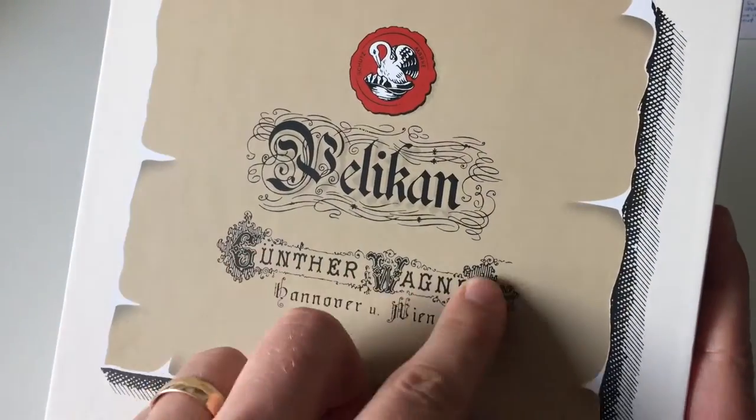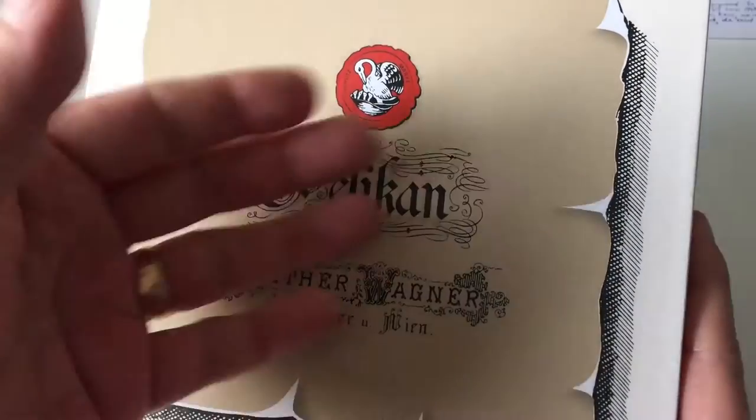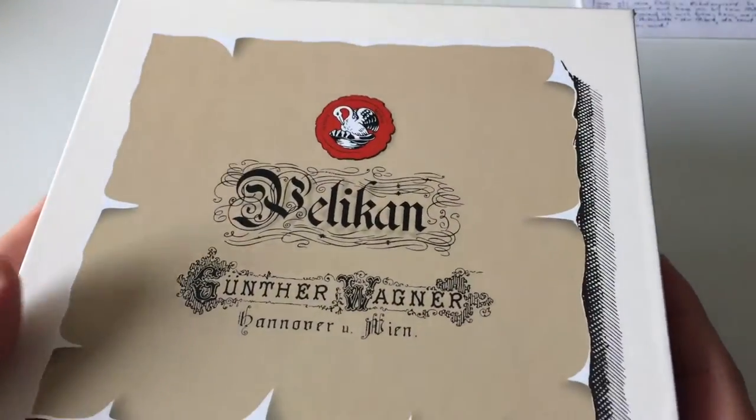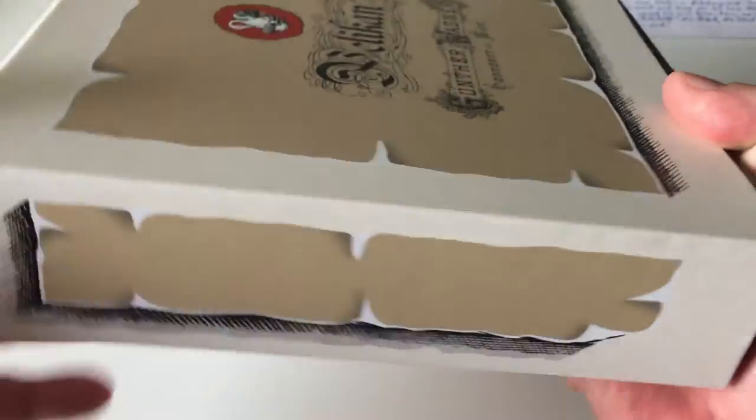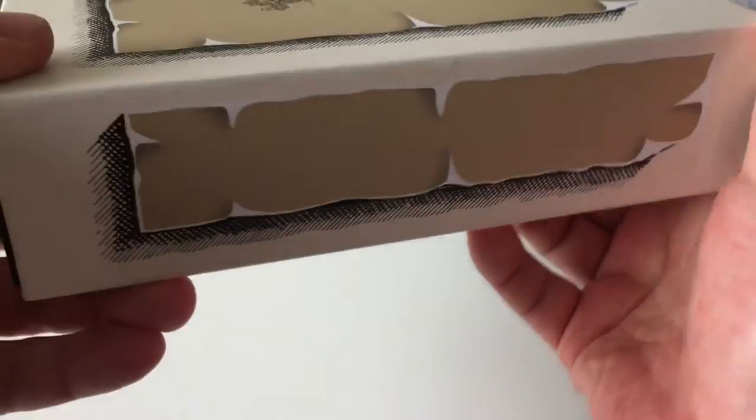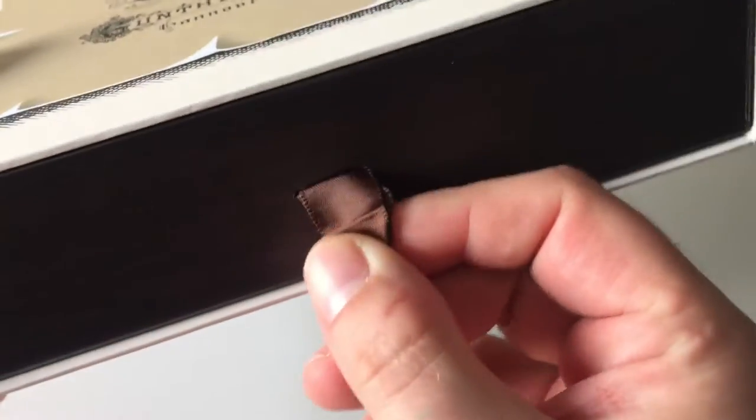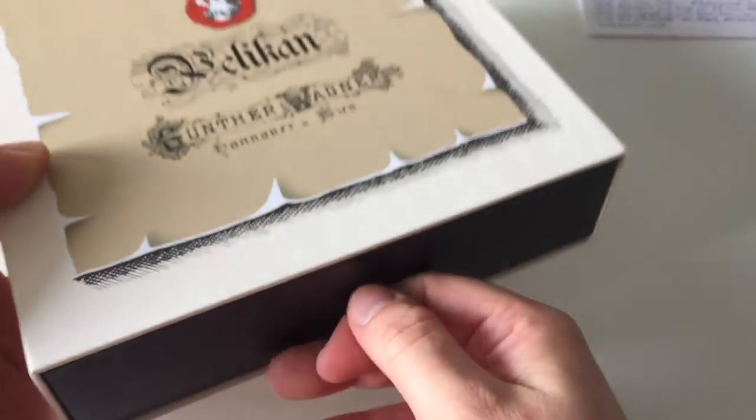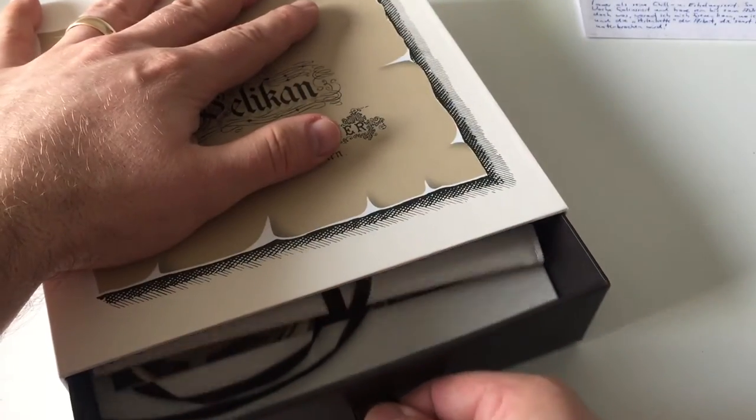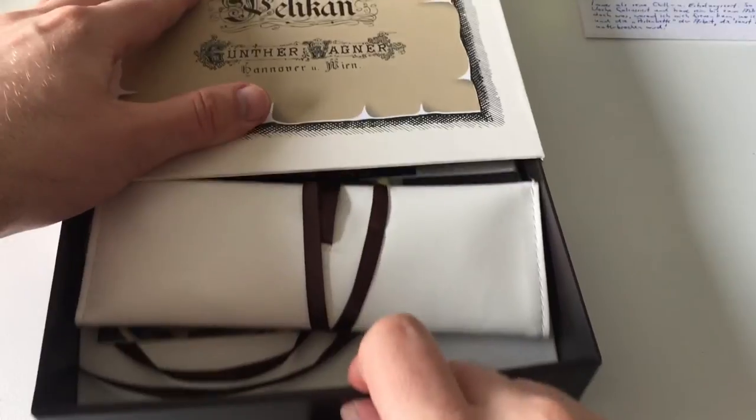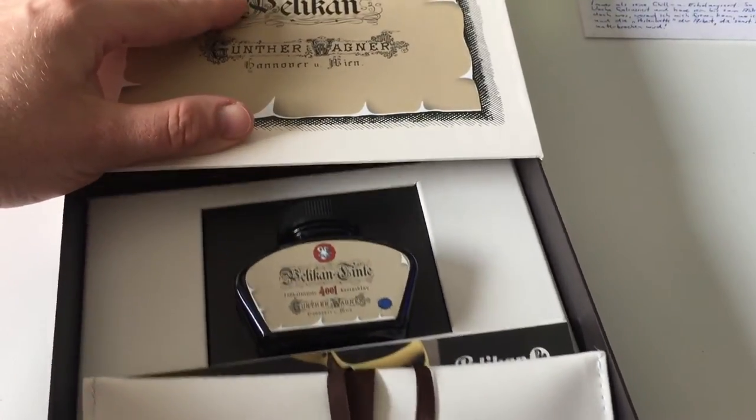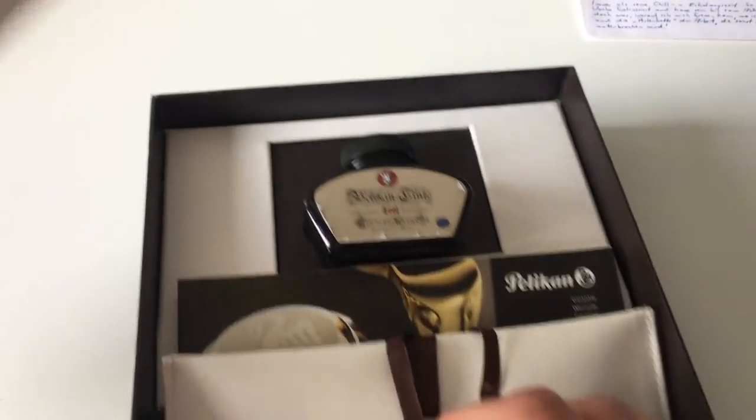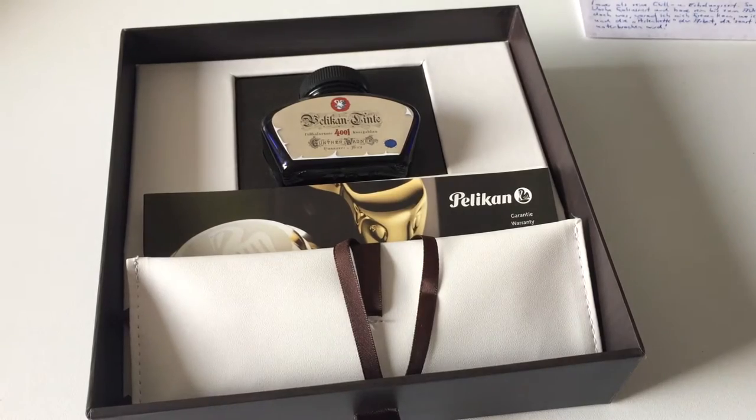It says Günther Wagner Hannover Wien, which is in reminiscence of the beginnings of Pelikan's company history. All these vintage design elements are around the box. Then you have a little fabric or satiny thing here that you can grab onto and pull out this large inner box.